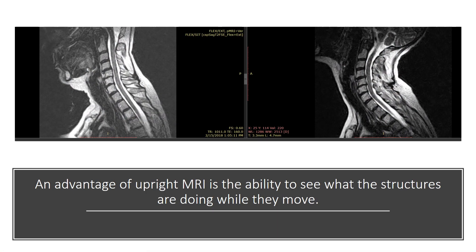An advantage of upright MRI, on the other hand, is the ability to see what the structures are doing as they move. We have a patient here on the left flexing her neck and on the right extending the neck. We can see some things buckling between these two positions that we wouldn't normally see on a supine MRI.